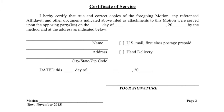Your motion also includes a certificate of service on the bottom of the second page. This section is where you will certify to the court that you will send or have sent copies of all of your documents to the other party.